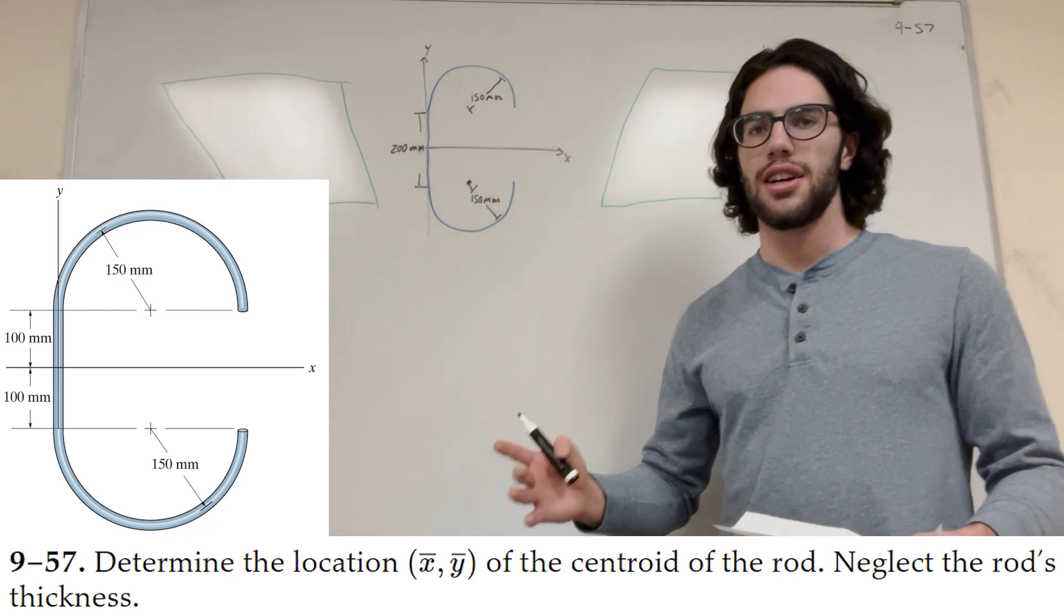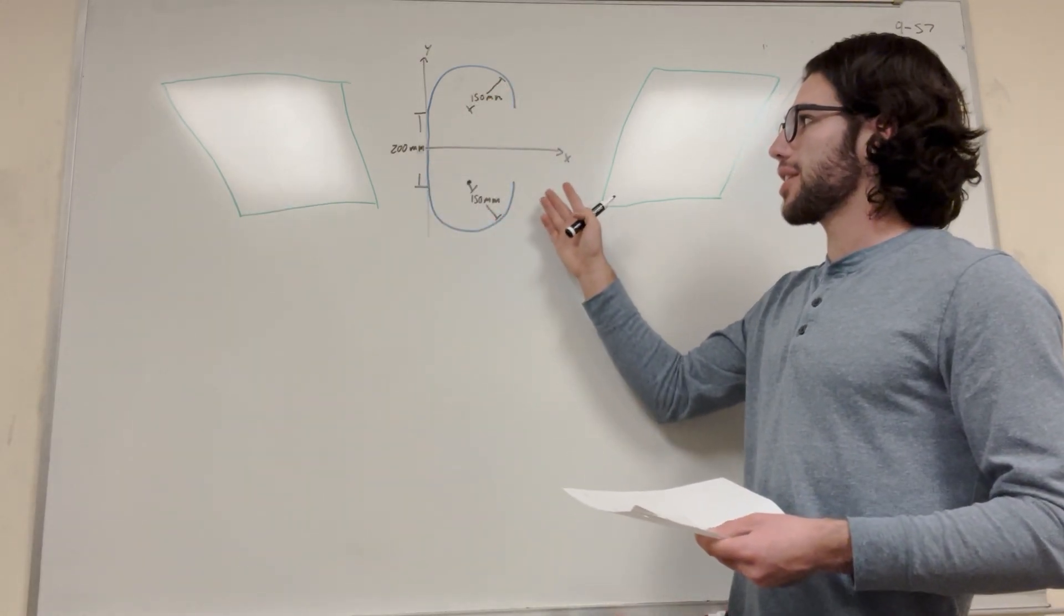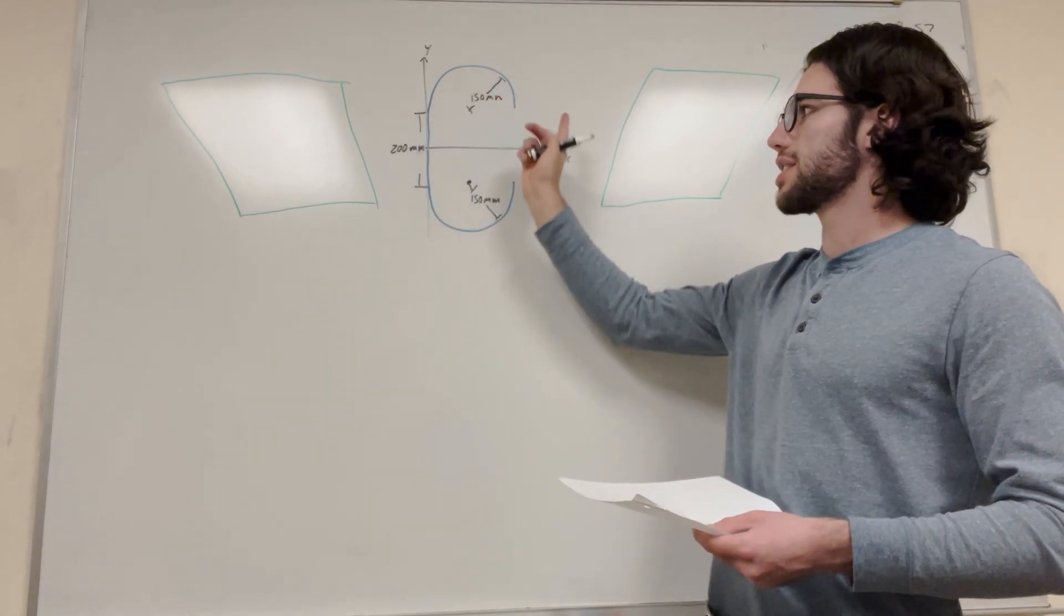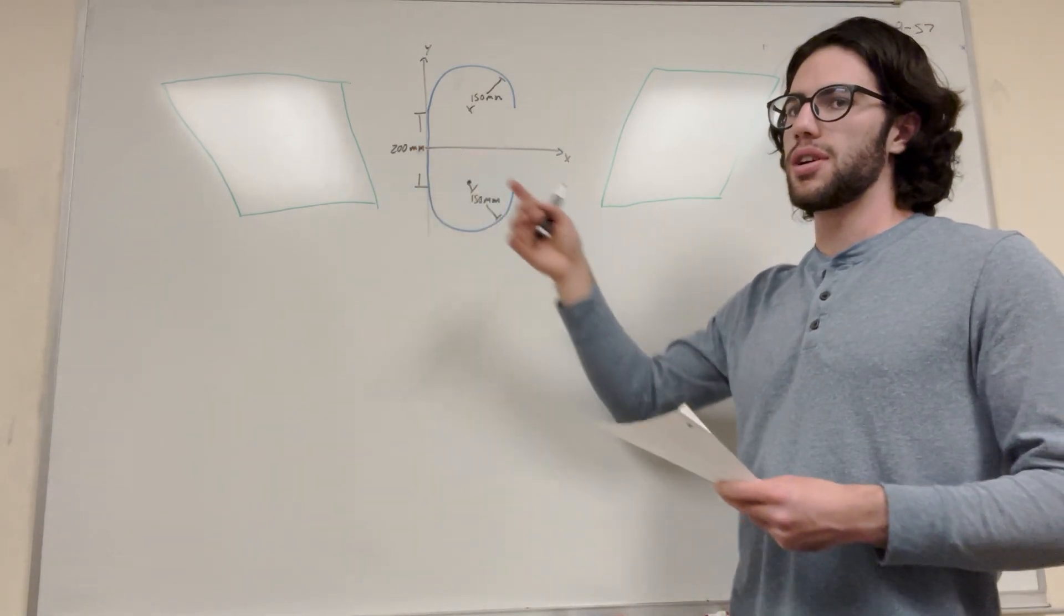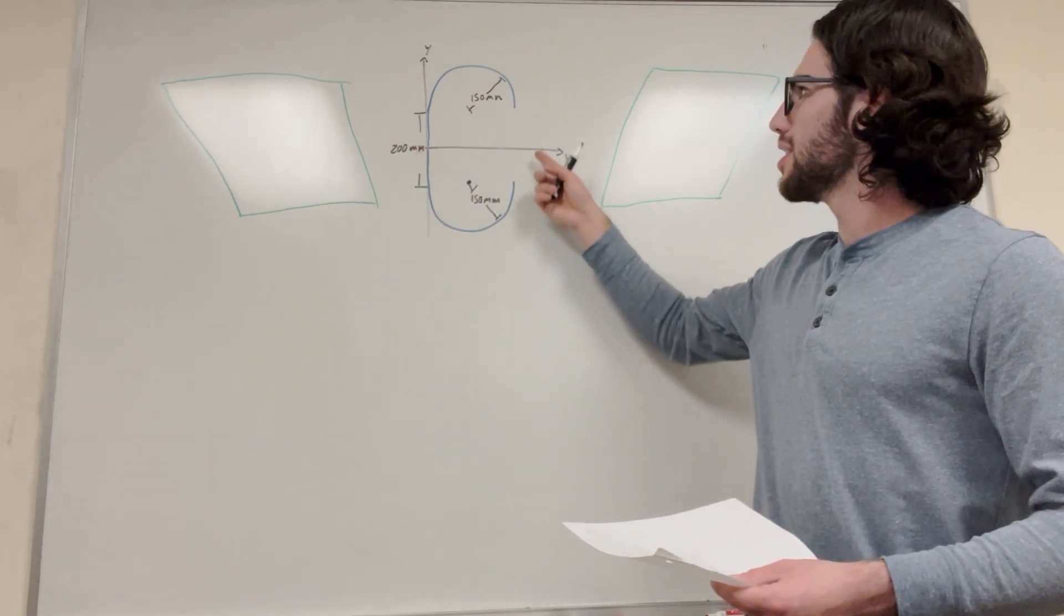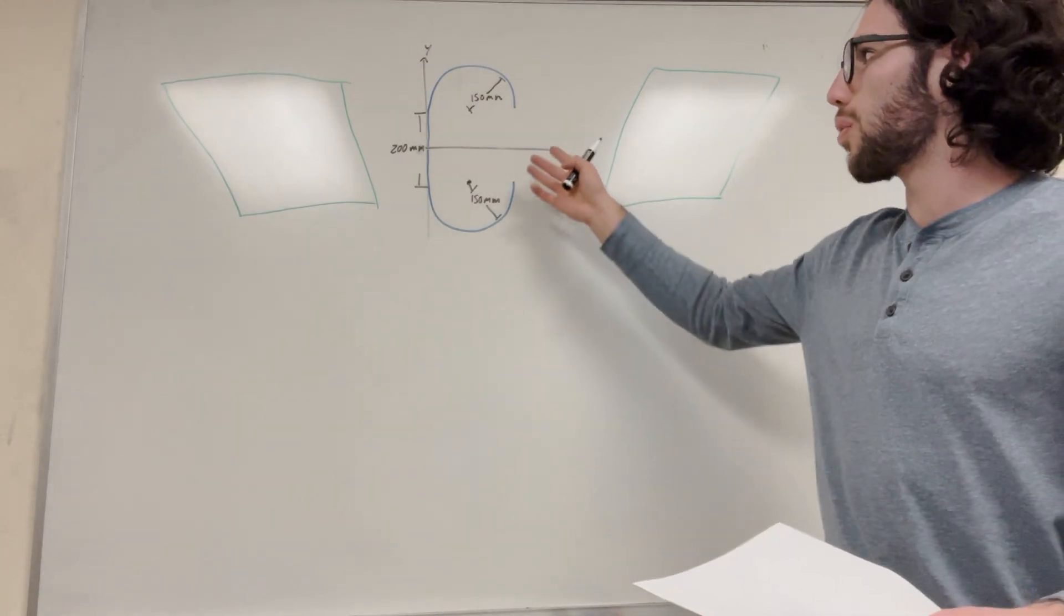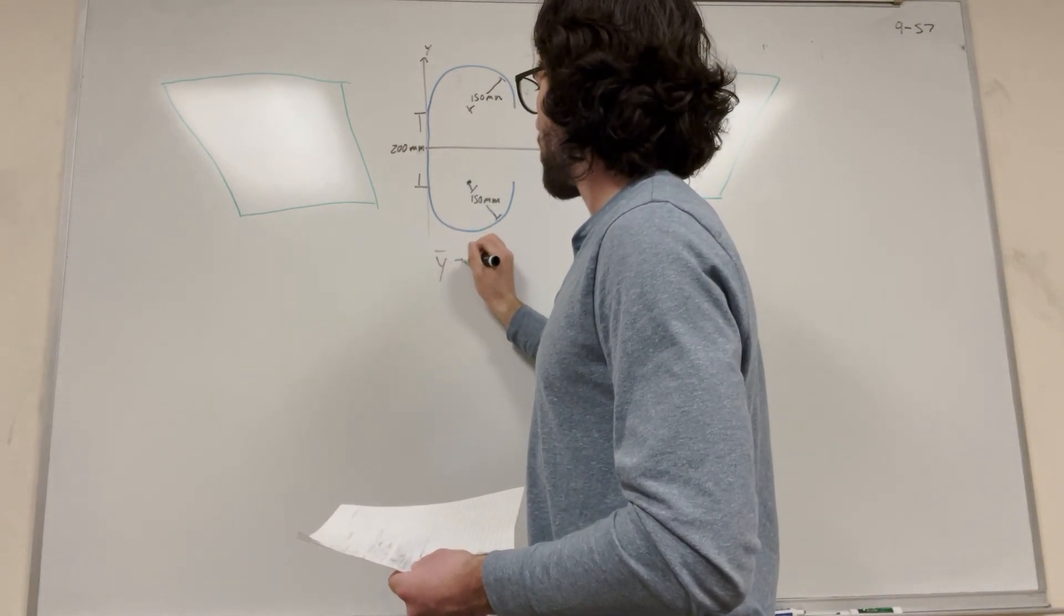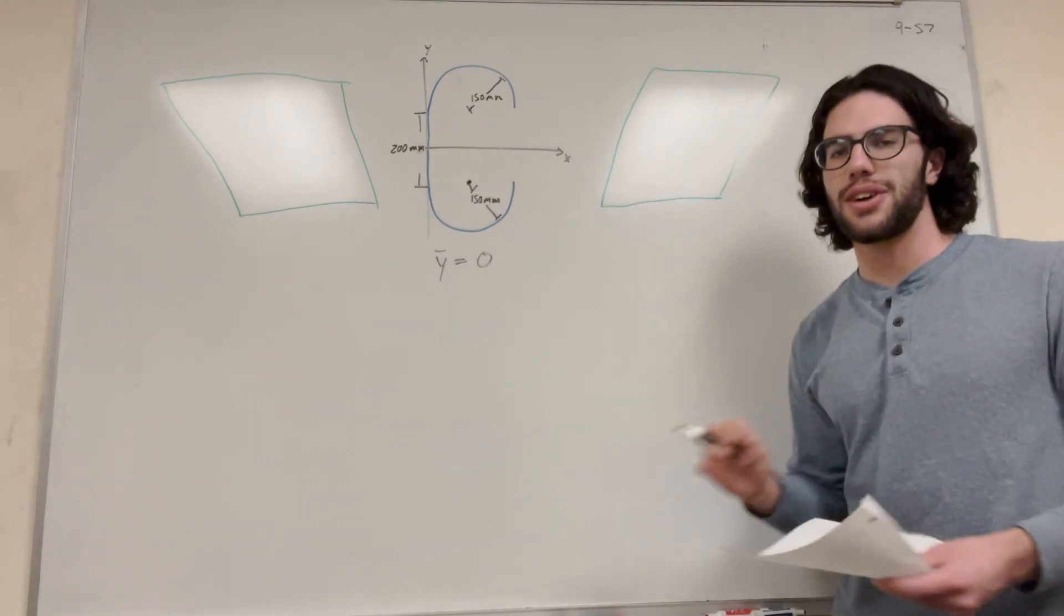Right away, the first thing we can do is look for symmetry. Looking at our diagram here, we see that the symmetry is across the x-axis. It's symmetric across the x-axis, which means that the y-center of mass is going to be equal to 0. That's pretty easy to tell right away, just because whatever's on the top is on the bottom, we know that the center of mass of y is going to be at 0. So right away, we know y-bar is equal to 0. One part of the way done.